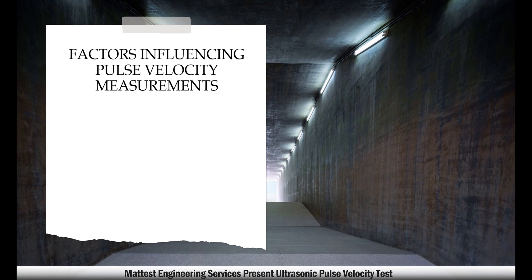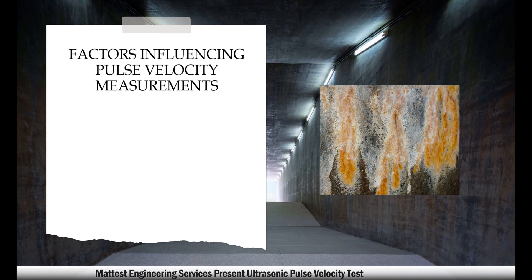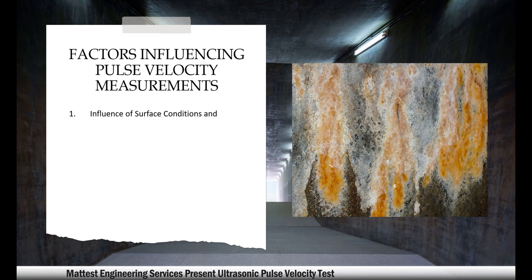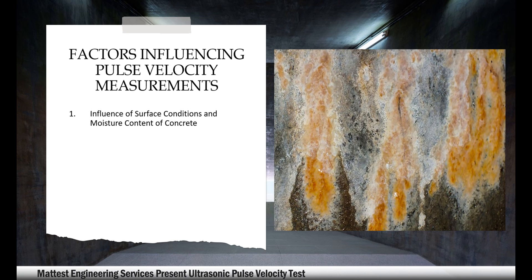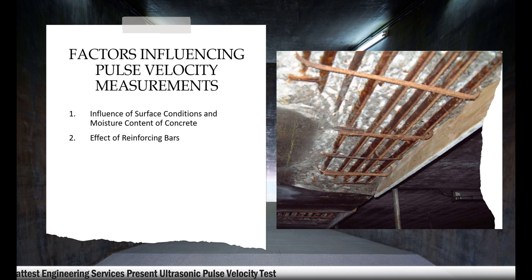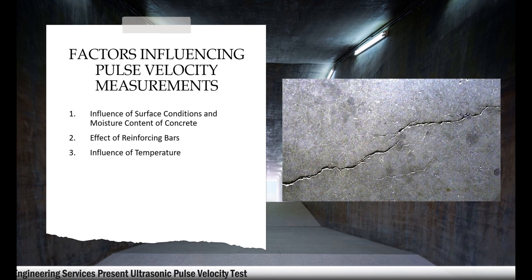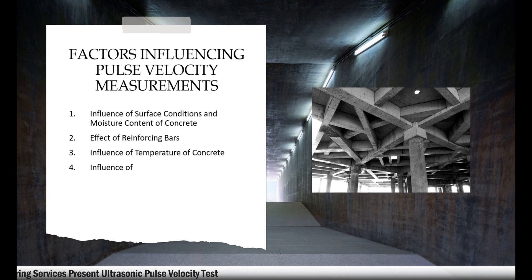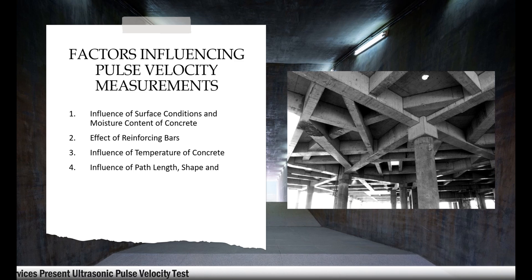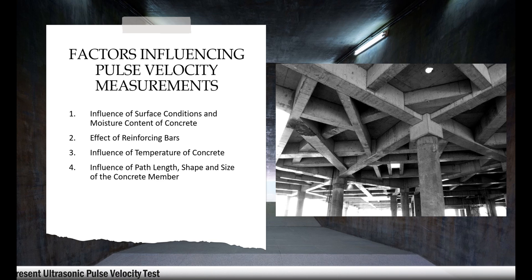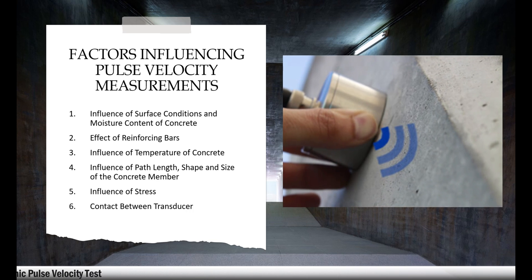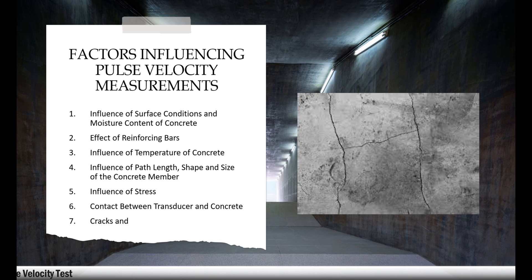Factors influencing pulse velocity measurements: first, influence of surface conditions and moisture content of concrete; second, effect of reinforcing bars; third, influence of temperature of concrete; fourth, influence of path length, shape and size of the concrete member; fifth, influence of stress; sixth, contact between transducer and concrete; seventh, cracks and voids. Velocity criterion for concrete quality grading.